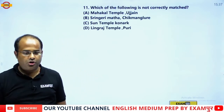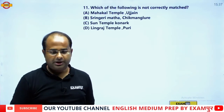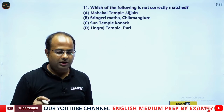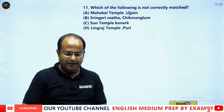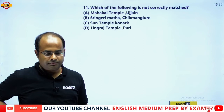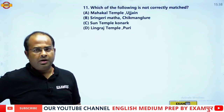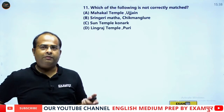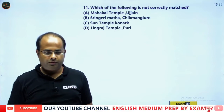The next question: which of the following is not correctly matched? Is it Mahakal Temple in Ujjain, Sringerimath in Chikmangalur, Sun Temple in Konark, or Lingaraj Temple in Puri? Most students may be confused between Sringerimath and Lingaraj Temple, as the first and third options are well-known.